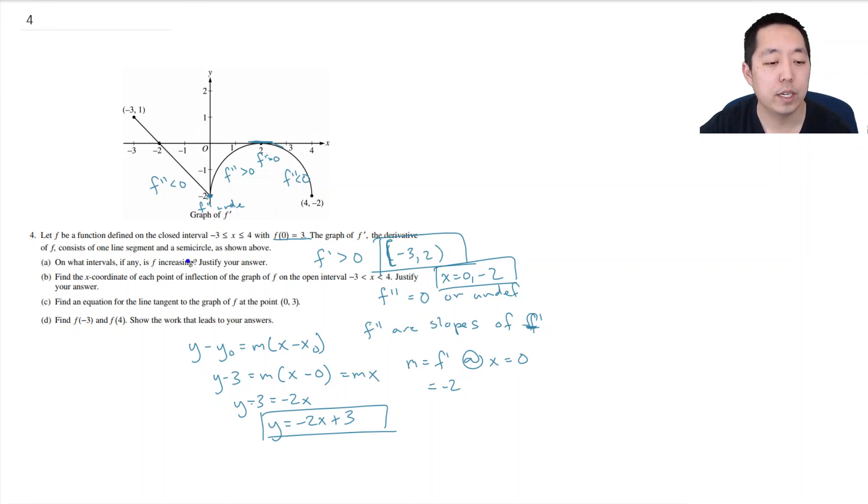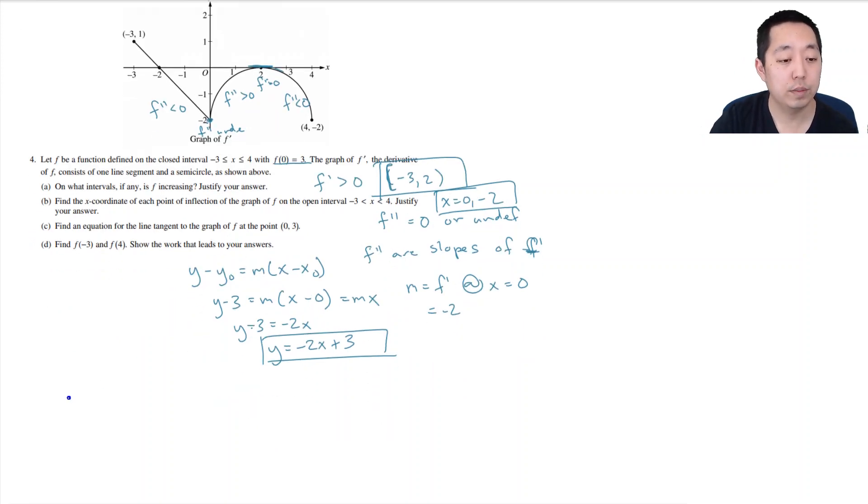Find f of negative 3 and f of 4 and show the work that leads to your answers. Well I know that in general f of x has to be the integral of f prime of t dt from 0 to x and then plus f of 0. This is a standard way you could write this, because I was given f of 0. This 0 has to just match this bottom one here. So I'm going to write this as 0 to negative 3 f prime of t dt plus f of 0 which is 3.